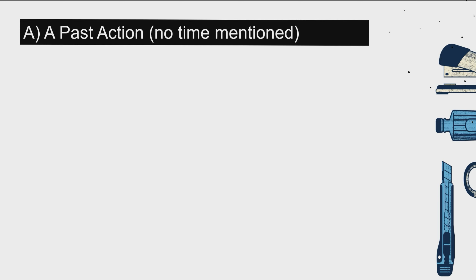What does 'no time mentioned' mean? A past action — 已经发生，但是没有讲时间 — already happened but no time is stated. For example: 'My father has gone out.' The subject is 'my father', verb is 'has gone'. Has means 已经出去了 — 我爸爸已经出去了. It's a past action, but no time is mentioned — 没有讲时间. We didn't say when he went out.